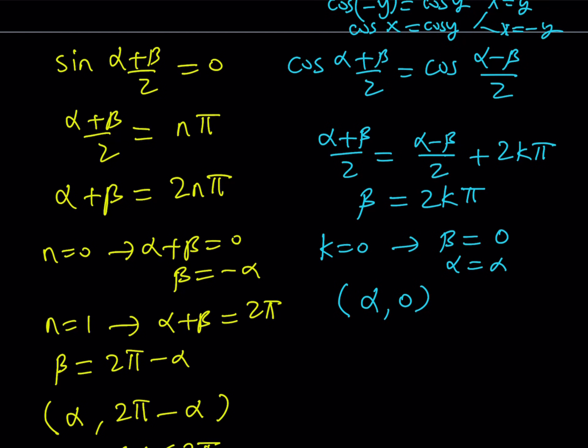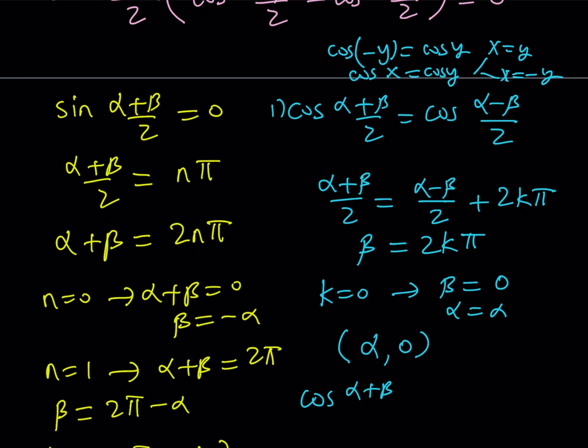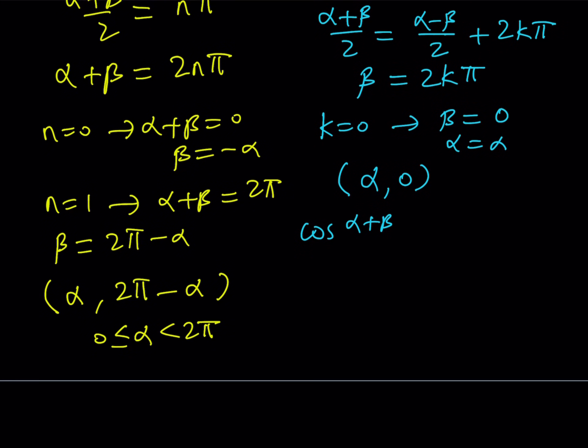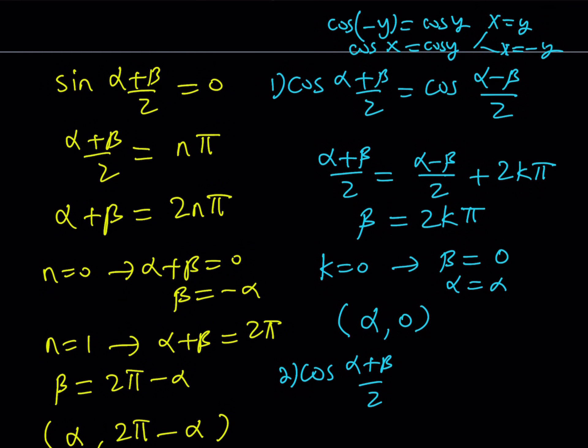And obviously, since this is symmetrical, alpha and beta are completely switchable, or you can just switch them around. We can do that. But let's just go ahead and follow. This was my first branch of the second branch, and this is the second of the second.